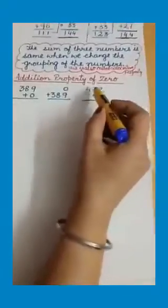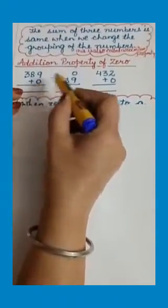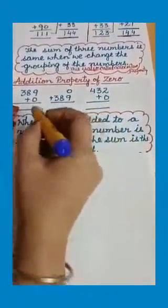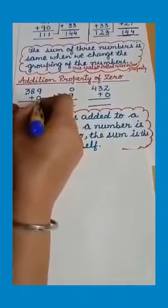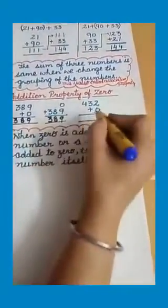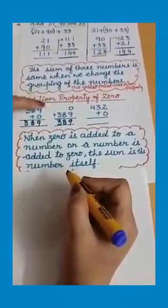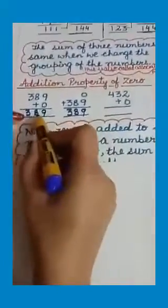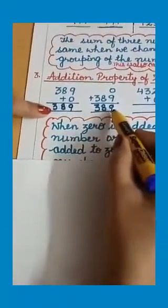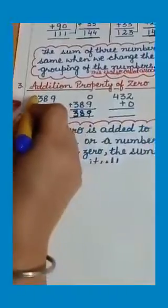The third property is addition property of 0. When 0 is added to any number, or any number is added to 0, we get the sum as the number itself. When we add 0 to 389, the answer is 389. When we add 389 to 0, again we get the same answer — the number itself.